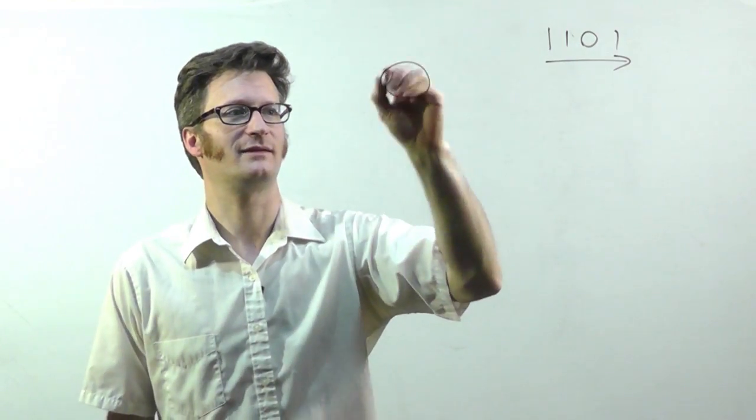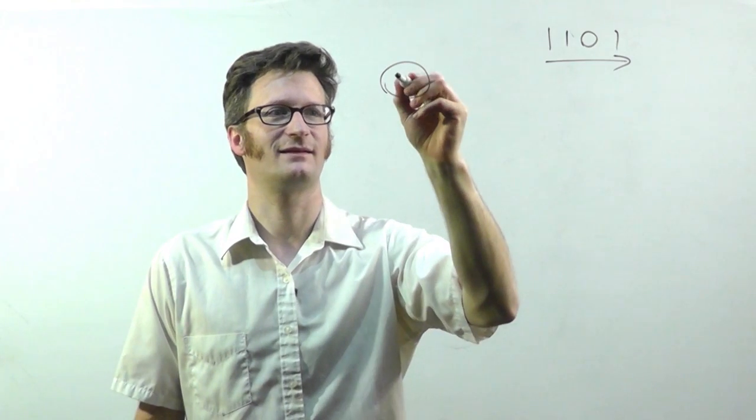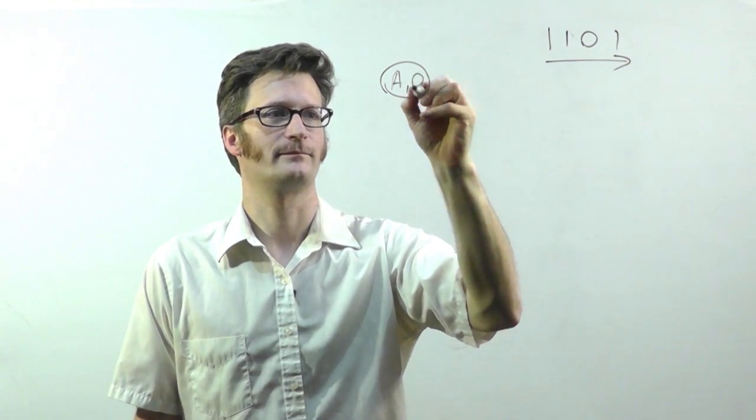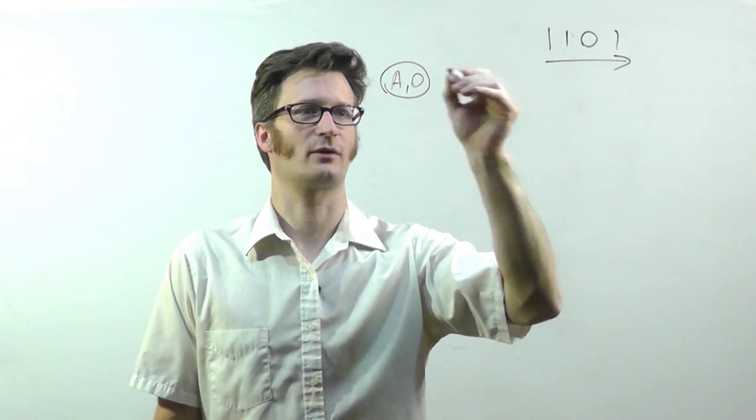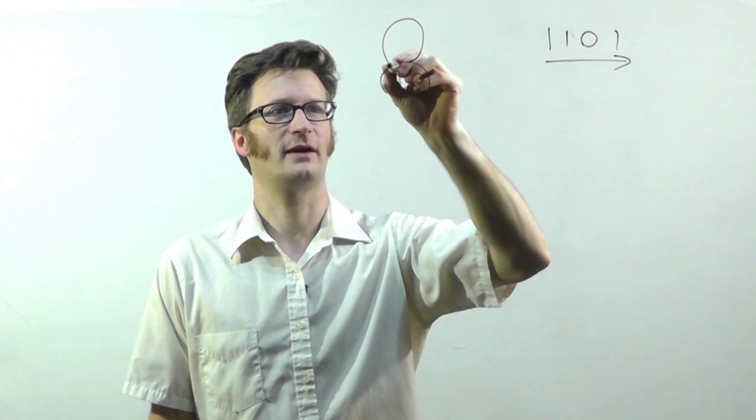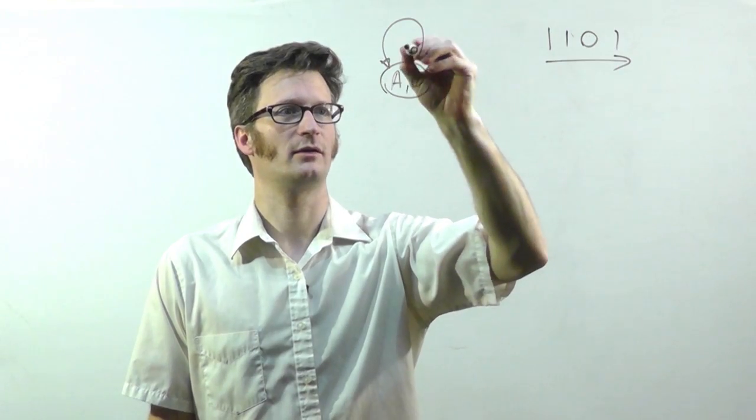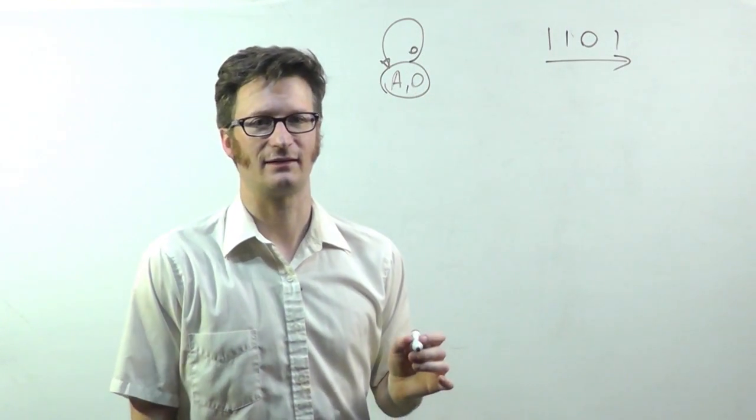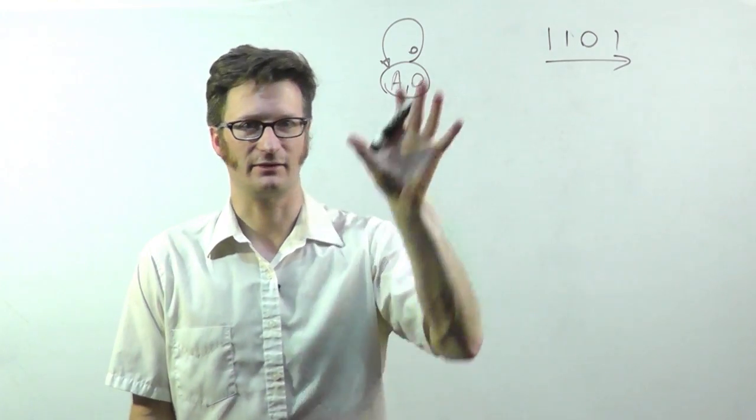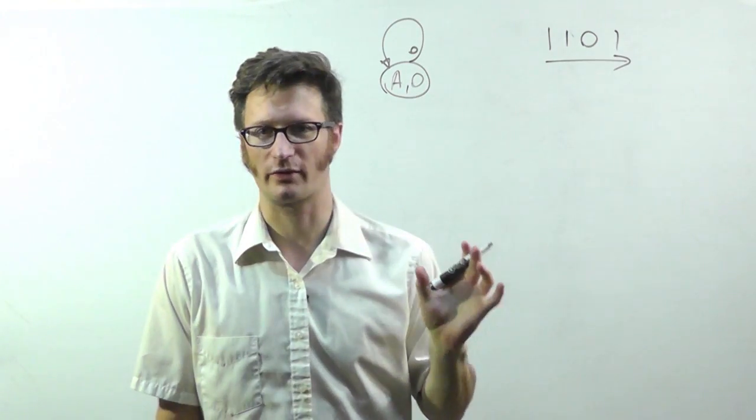So we need a state to start with, and that's going to be this state. We're going to be looking for a 1. So if we don't find a 1, if we find a 0, we're going to go back to this state. And you can tell just by looking at this, this is a Moore state machine.